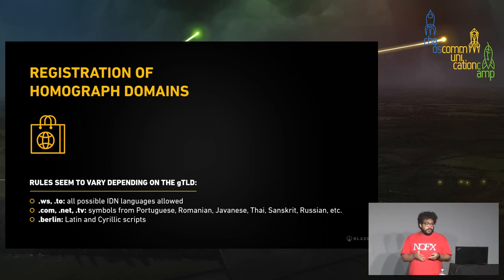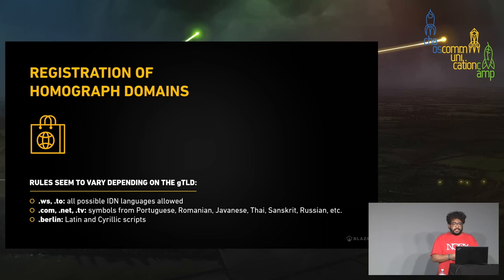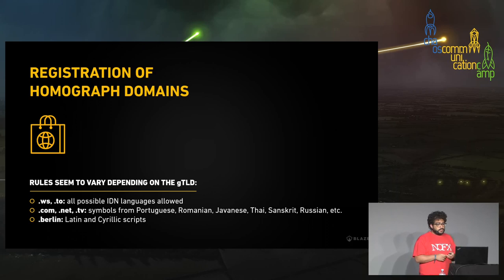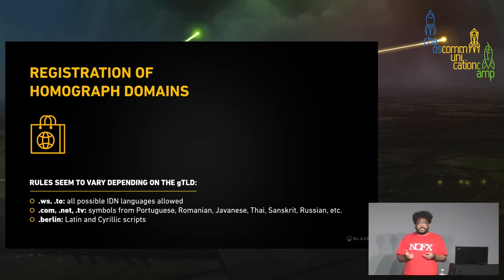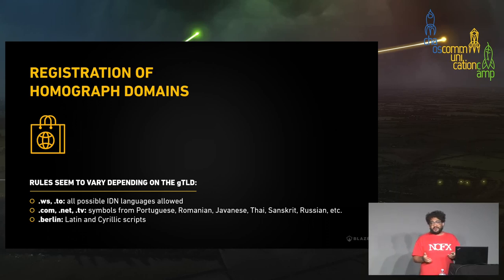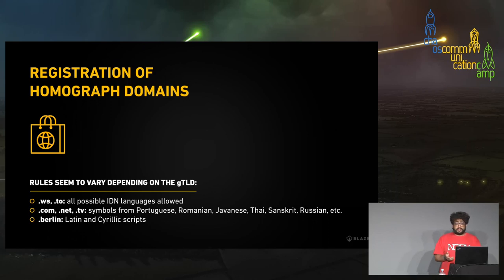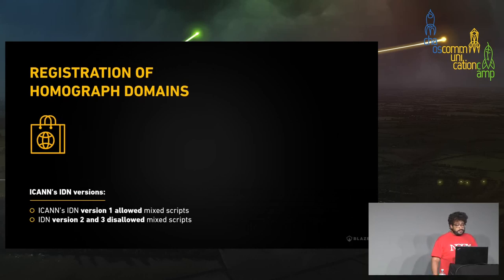The rules around registration of homograph domains vary a lot depending on the top-level domain registrar. For example, .net, .com, .tv, and similar TLDs allow different scripts from many languages including Portuguese, Romanian, Javanese, and Thai. A few others are more permissive — .ws, .to, and .la even allow emojis, even though the RFC doesn't permit them. Some TLDs like .berlin only allow Latin and Cyrillic scripts.